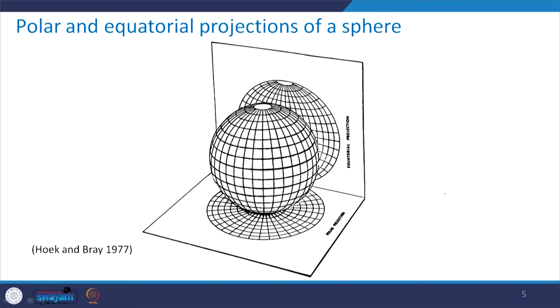Think of a globe with latitude and longitude used for representation of geological data. Place the globe in space with a vertical plane and a horizontal plane. The projection on the vertical plane is called the equatorial projection, and the projection on the horizontal plane is called the polar projection.